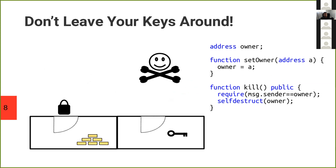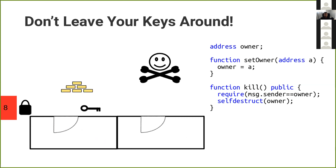In this example, we still have a room with gold but it's locked, so the pirate cannot simply steal it. But there's another room containing a key — a more sophisticated attacker like our pirates can take the key, unlock the door, and then steal the gold. On the right-hand side, there is a function set owner which is public by default, and the attacker can set themselves as the owner, bypassing the guard in the kill function.